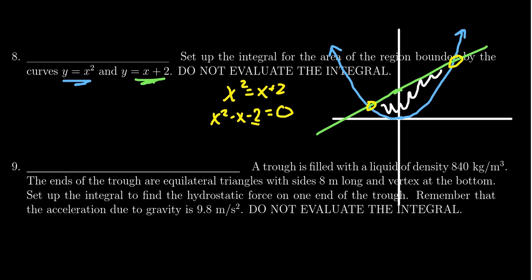We want factors of negative 2 that add to negative 1. Not a lot of options for a prime number. So you're going to get x minus 2 and x plus 1. And so this is going to give you, as your intercepts, x equals positive 2 and negative 1.